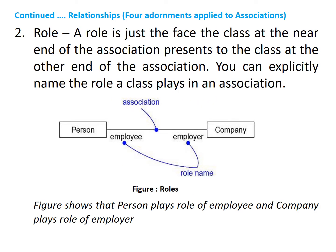The second adornment is the role. When a class participates in an association, it has a specific role that it plays in that relationship. Here, the relationship between Person and the Company class is the association. At the end of the Person class, the role is shown as 'employee', whereas at the end of the Company class, the role is given as 'employer'. That is, in this association, Person plays the role of employee, whereas Company plays the role of employer.